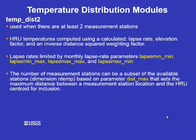The temp_dist2 module is a little more complicated. This module calculates a lapse rate, an elevation factor, and an inverse distance squared weighting factor. The lapse rates are limited by the monthly lapse rate parameter values that must be defined. The dist_max parameter sets the maximum distance for stations to be included. If you are going to use this method, you should read the manual for further information.